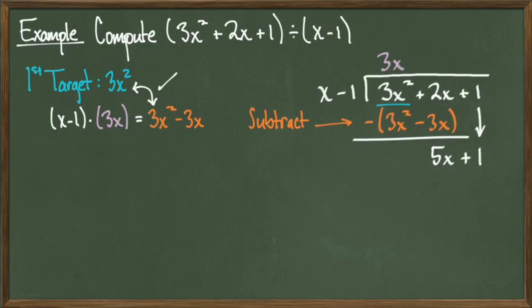Since our target term 3x squared came up in this product, they cancel each other out in this subtraction, which leaves us with 5x, and then we just drop down the 1 like we would in regular long division with numbers. This gives us our new target term, 5x.